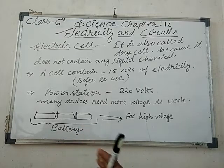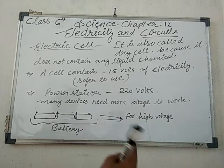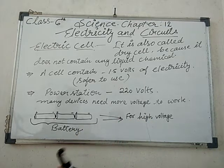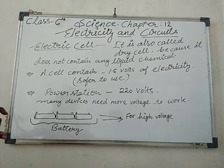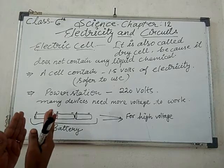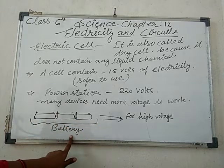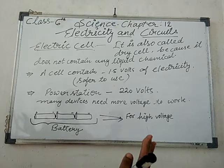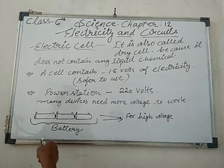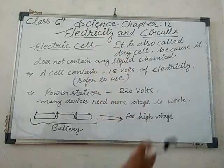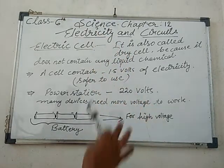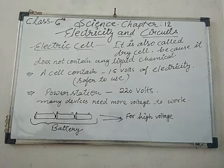Many devices need much more voltage to work properly. For that, we require more than two cells. When we combine two or three cells together, there is a formation of a battery. When we combine them, it is known as a battery, and we use a battery for high voltage devices — those that need high voltage to work properly.